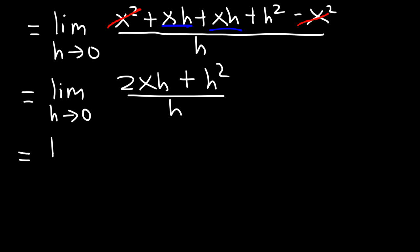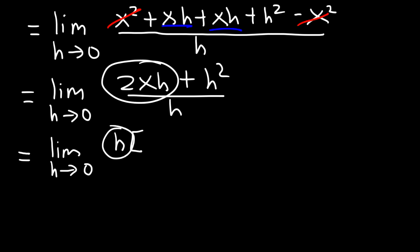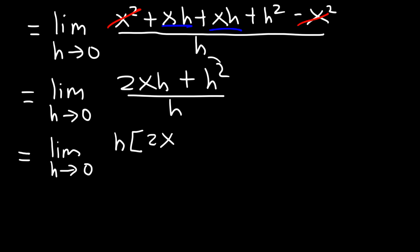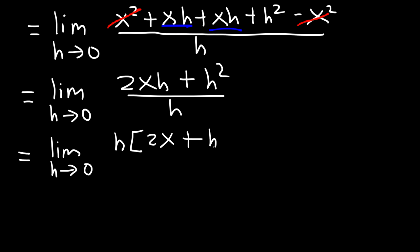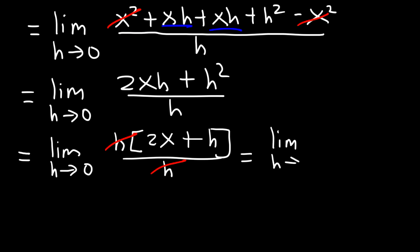Once you get to this step, what we need to do is factor out an h — the GCF. 2xh divided by h is 2x. And h squared divided by h is h. We can cancel the h variables on the outside — h divided by h is 1. So this gives us the limit as h approaches 0 for 2x plus h.